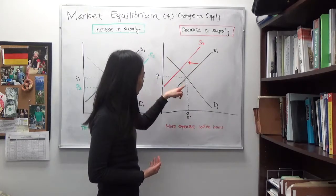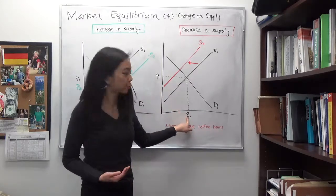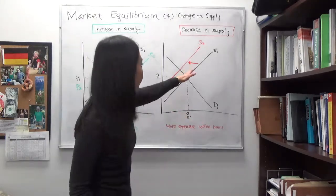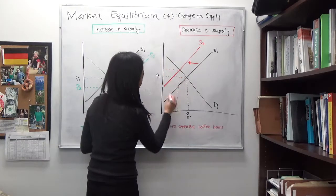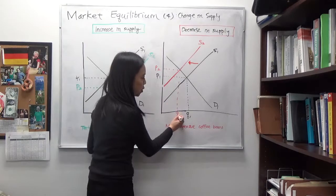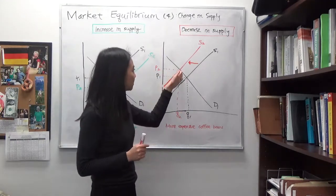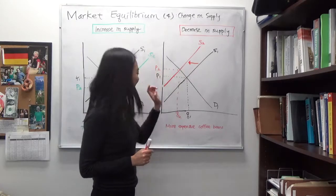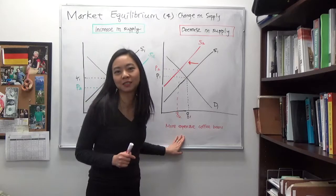So you will compare to the original price and quantity. The original price was P1, original quantity was Q1. And after the shift, you will have a new equilibrium price P2 and a new equilibrium quantity Q2. So you can see how your price is going to go up and equilibrium quantity is going to go down because of more expensive coffee beans.